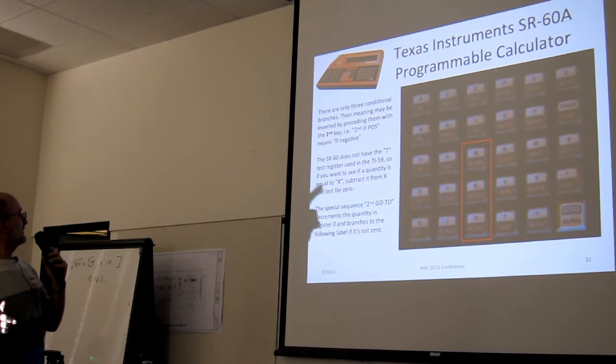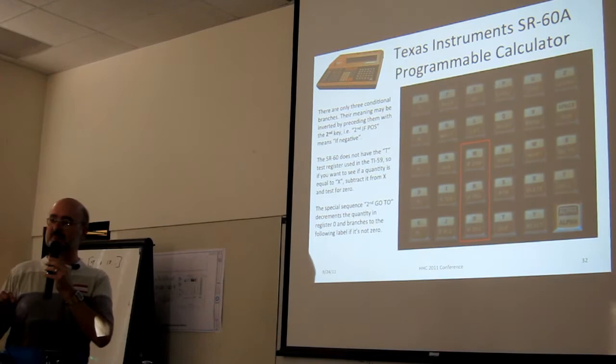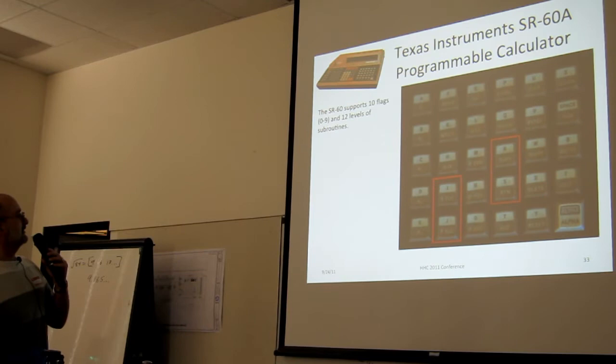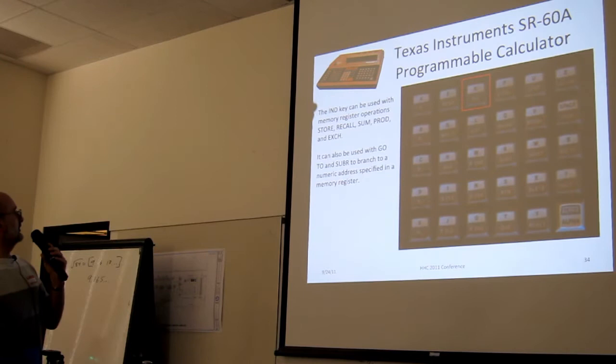There is a special sequence, second key, go to, and that does a decrement. It's called DSZ and whatever's in register zero, and that's the only decrement register. So nested loops are, again, kind of clunky. We have ten flags and twelve levels of subroutines. Overkill, probably, but nice to have. We have full indirect addressing and indirect register arithmetic and indirect go to and go sub. Also nice.